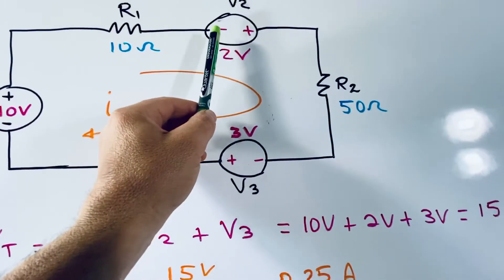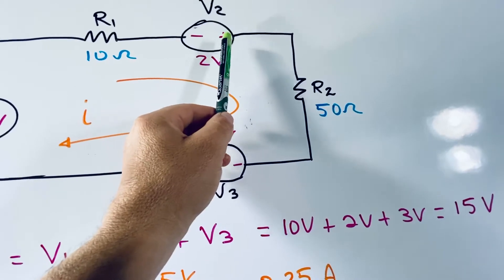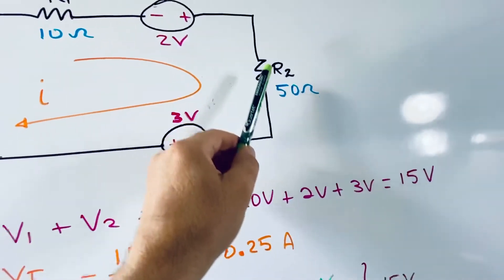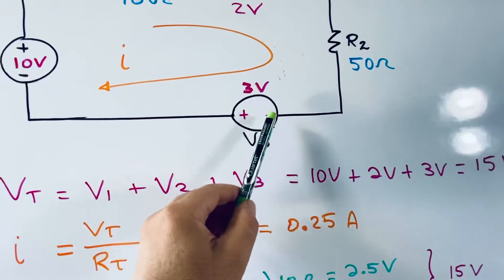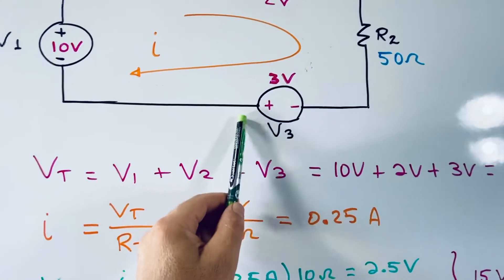You arrive with negative and you leave the node or the power supply with a positive, so V2 is positive. Then you keep traveling this way and you enter with negative but you leave with positive, so V3 is positive.